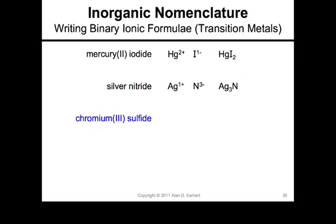Chromium(III) sulfide: chromium(III) means Cr 3+. Sulfide is in column 6A, so it's 2−. The least common multiple of 3 and 2 is 6, so you need 2 chromiums and 3 sulfides: Cr₂S₃. Note that the Stock number is only put into the name — it is not placed into the chemical formula.